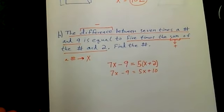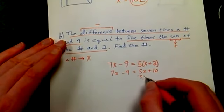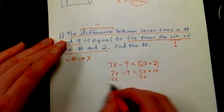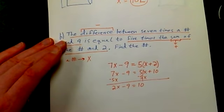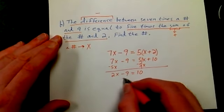Get our X's on the same side, so I'll subtract 5X. And so we got 2X minus 9 equals 10. And now it's pretty basic from the last time. I'll add 9 to both sides.